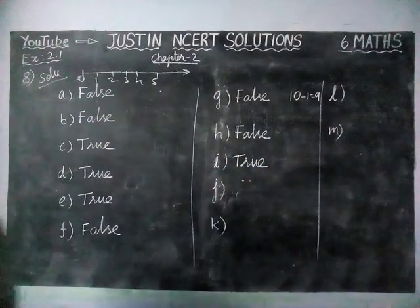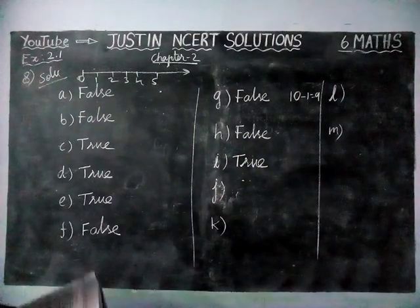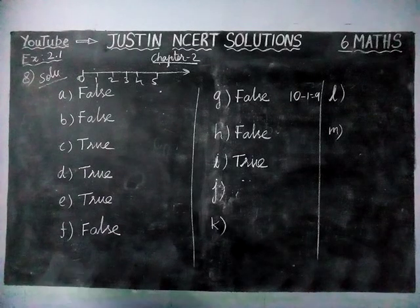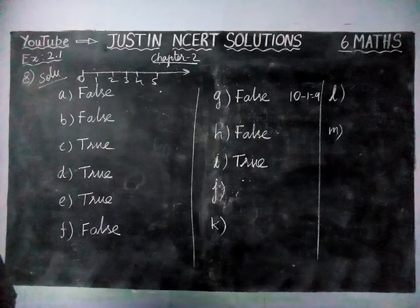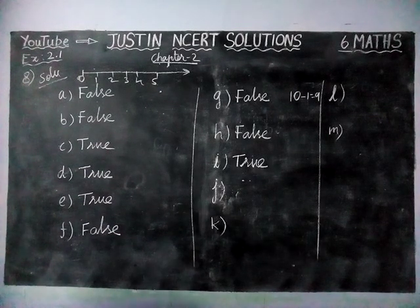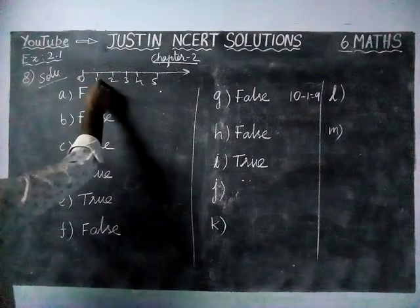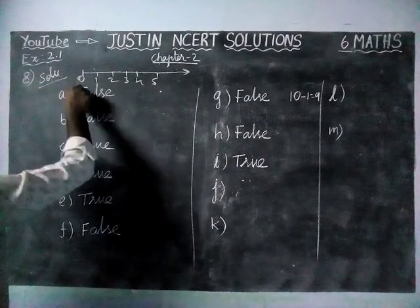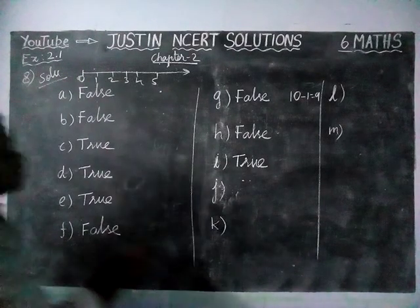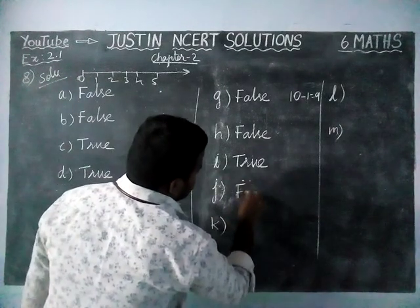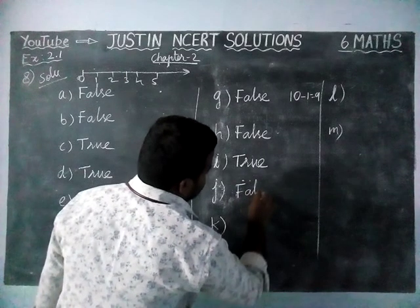Next, option J: 'The whole number 1 has no predecessor.' In the case of whole numbers, the predecessor of 1 is 0, which is available. Therefore, this statement is false.